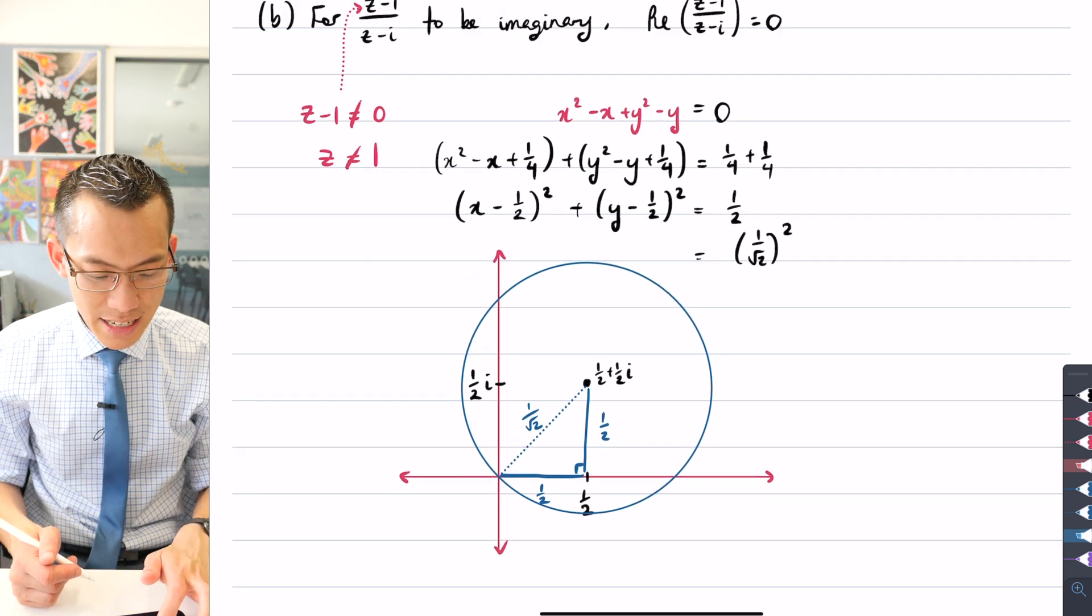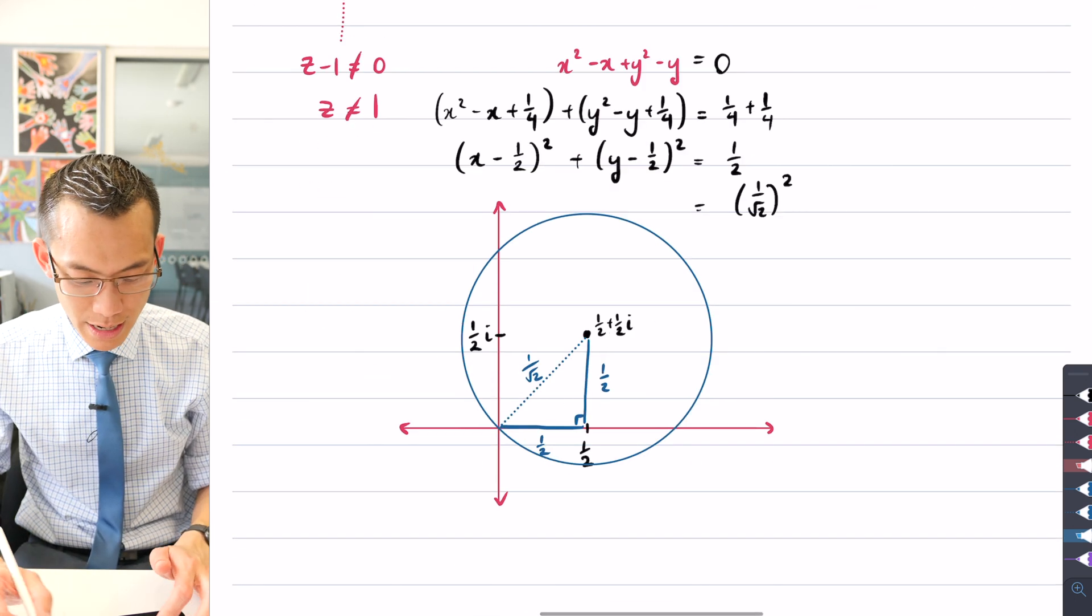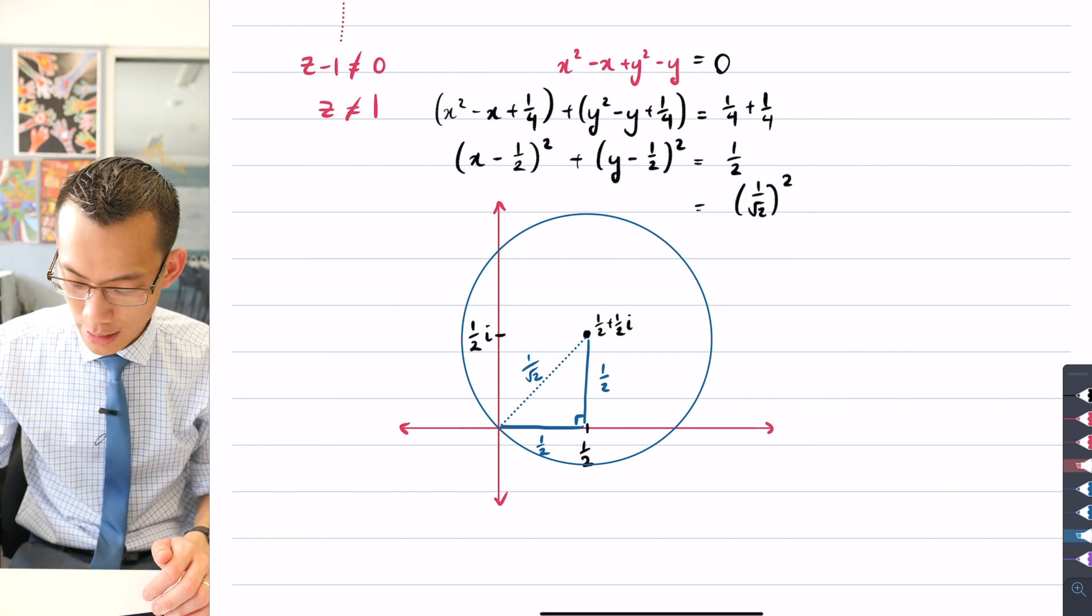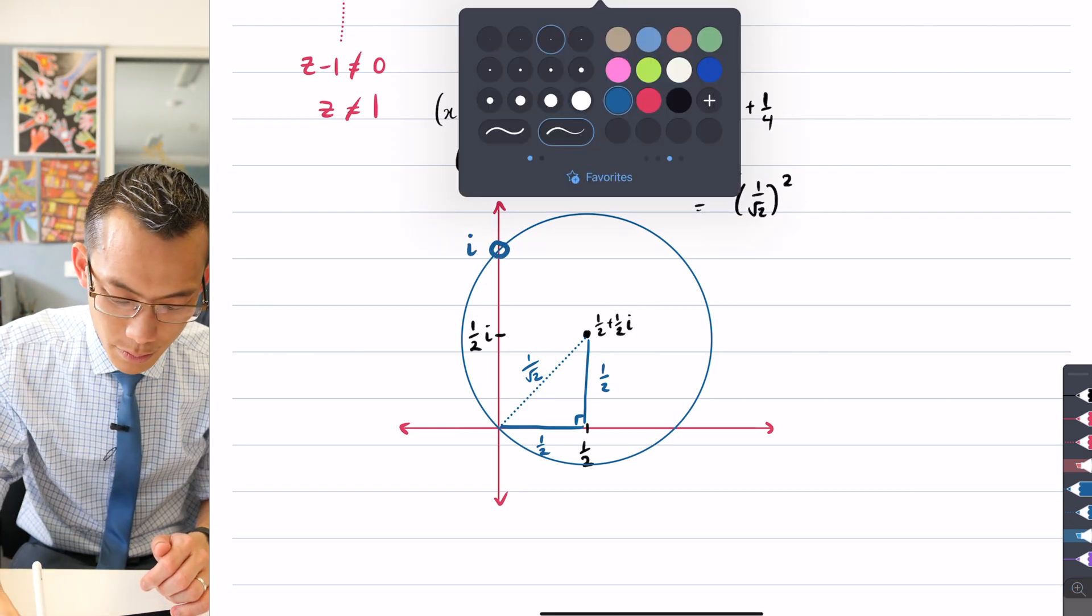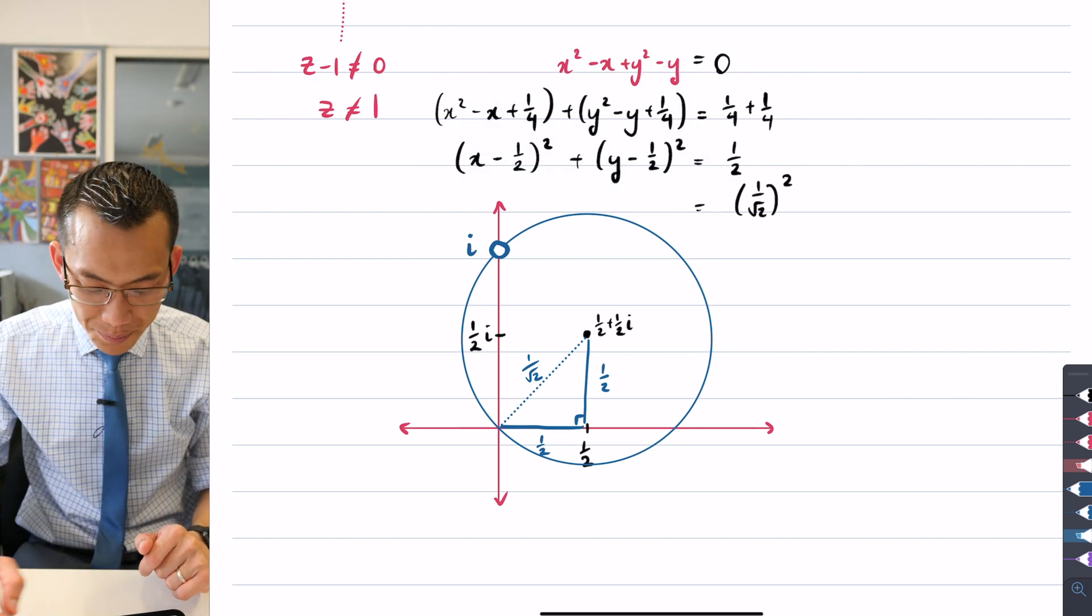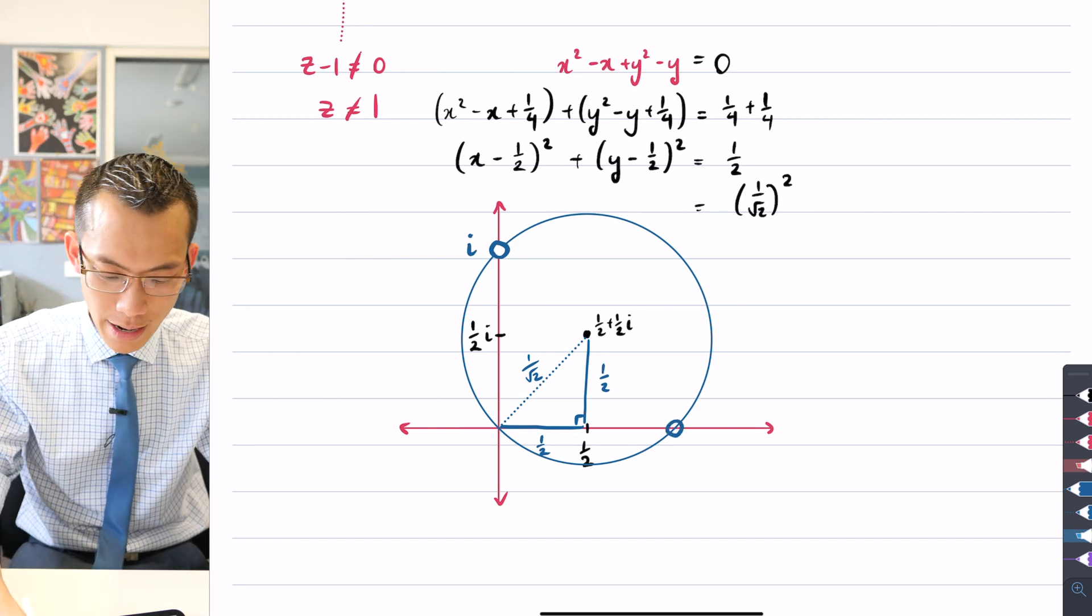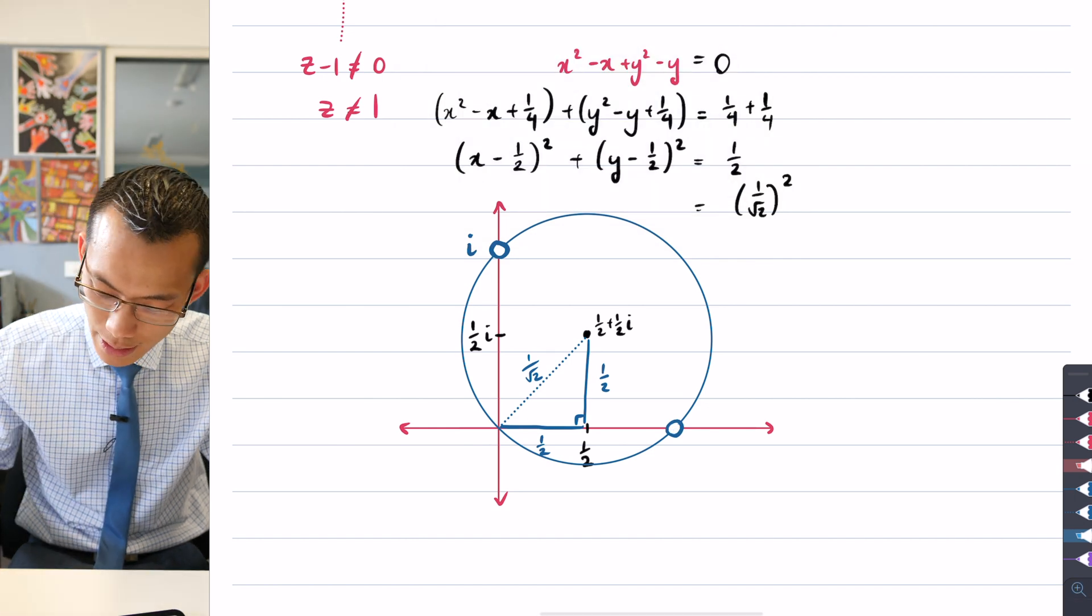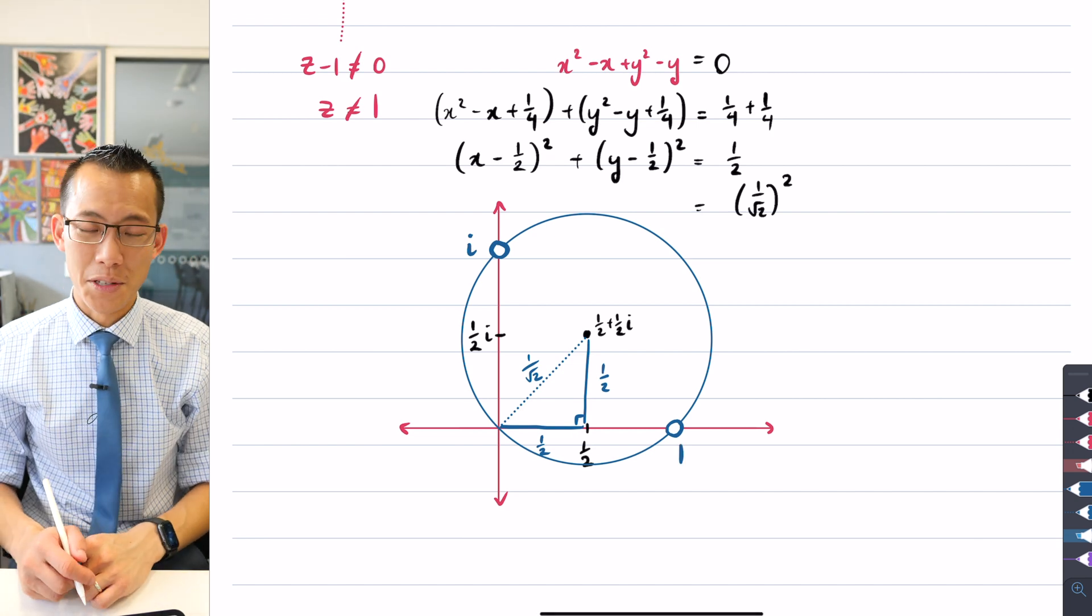But you can see here that I need to exclude these two points that I noticed before. Where is z equals i? Well, z equals i is, if this is half i, then i is up in this corner over here. So therefore, I need to put a hollow circle at i. And in the same way, I need to put in a hollow circle at z equals one, which is down here in the bottom right-hand corner. This point over here is one, they are not included, but every other point on the circumference is.